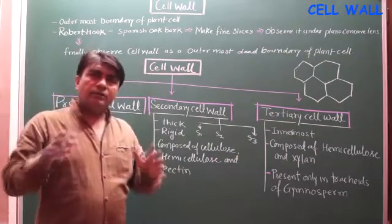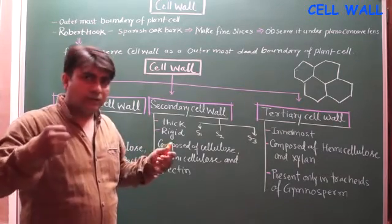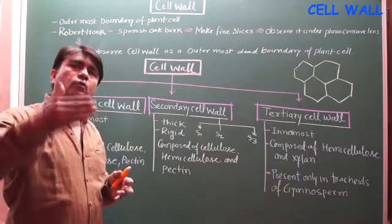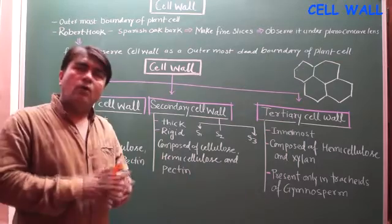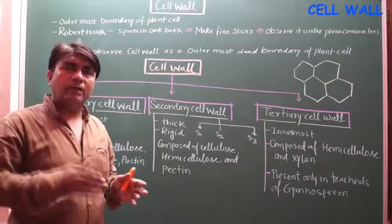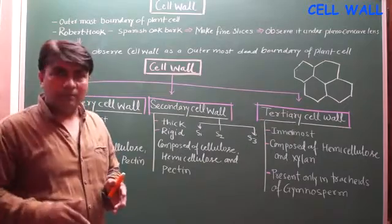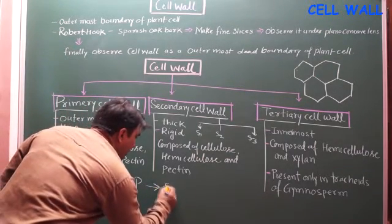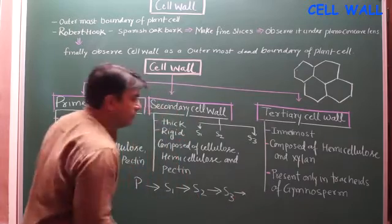So, plants are composed of plant cells covered by a protective cell wall. From outside to inside, the sequence is: primary, then secondary S1, S2, S3, and then tertiary (only in gymnosperm tracheids). A common exam question asks for the sequence of cell walls from outside to inside — from the middle lamella side to the plasma membrane side. The sequence to remember is: primary → S1 → S2 → S3 → tertiary (in gymnosperms).